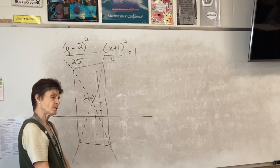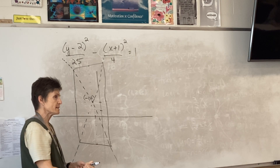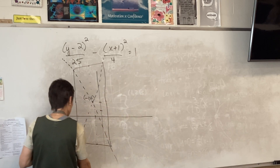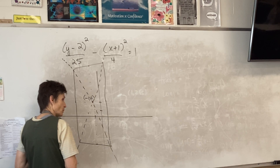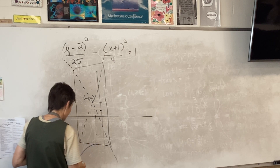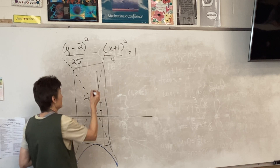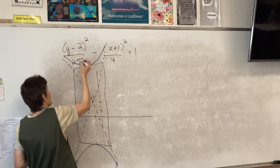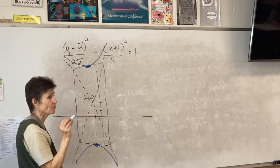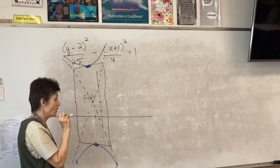Now draw in your diagonals, with solid or dashed lines — it doesn't matter. Once you get those in, you're ready to draw the actual curve. Pay close attention to your equation — which way are you drawing this curve? Are we vertical or horizontal? We're going to be vertical again, because y comes first.